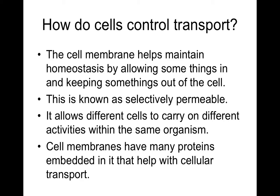The cell membrane helps maintain homeostasis by allowing some things in and keeping some things out. This quality of being able to pick what comes in and out is called selectively permeable. Think of being in the cereal aisle at a grocery store — you pick the cereal you want and don't pick the ones you don't. The cell does the same, picking what it needs and only keeping those things inside. 'Permeable' — think of porous — means some things can move through the membrane easier than others.